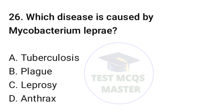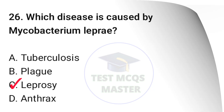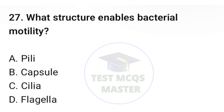Question number twenty-six: which disease is caused by Mycobacterium leprae? The correct option is C, leprosy. Question number twenty-seven: what structure enables bacterial motility? The correct option is D, flagella.